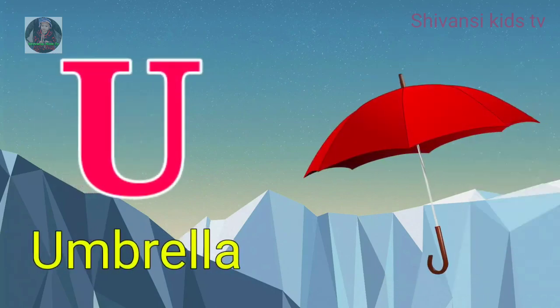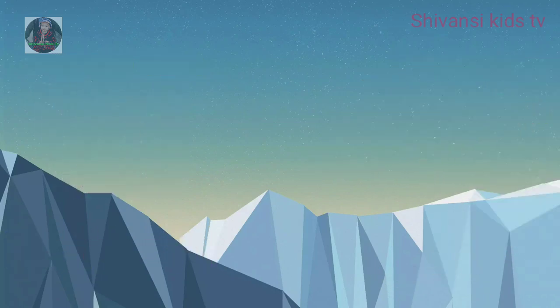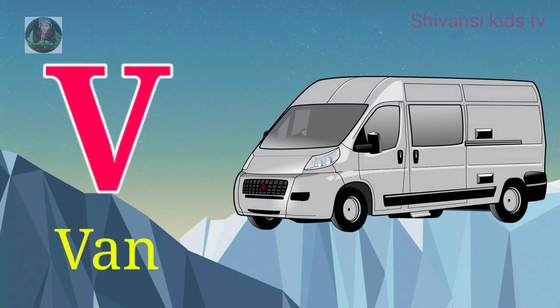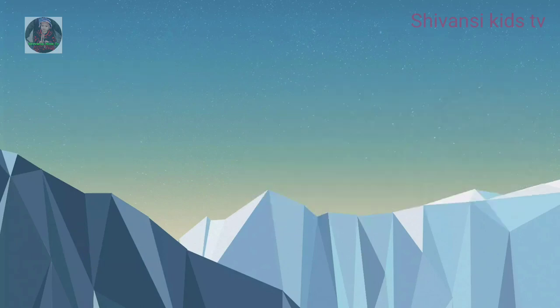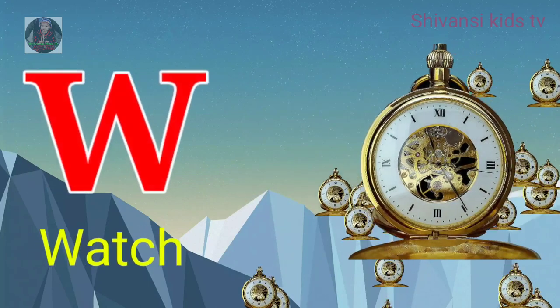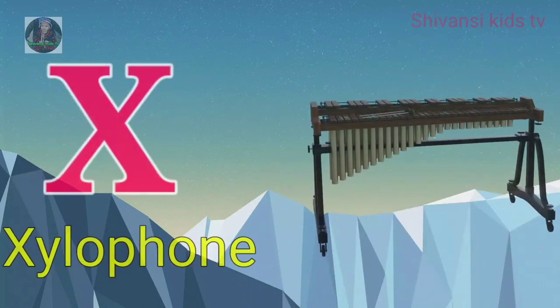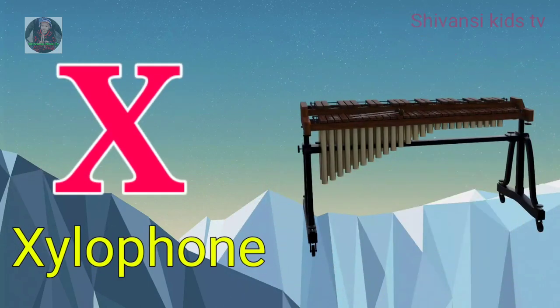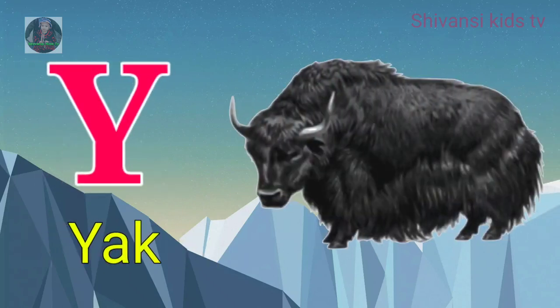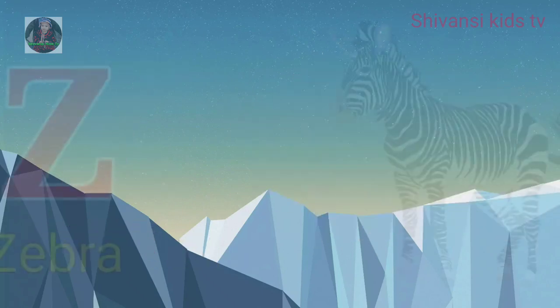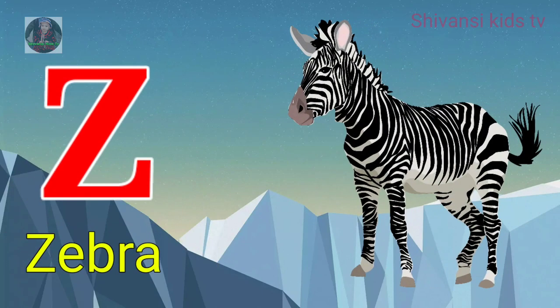U for umbrella, B for man, W for watch, X for xylophone, Y for yard, Z for zebra.